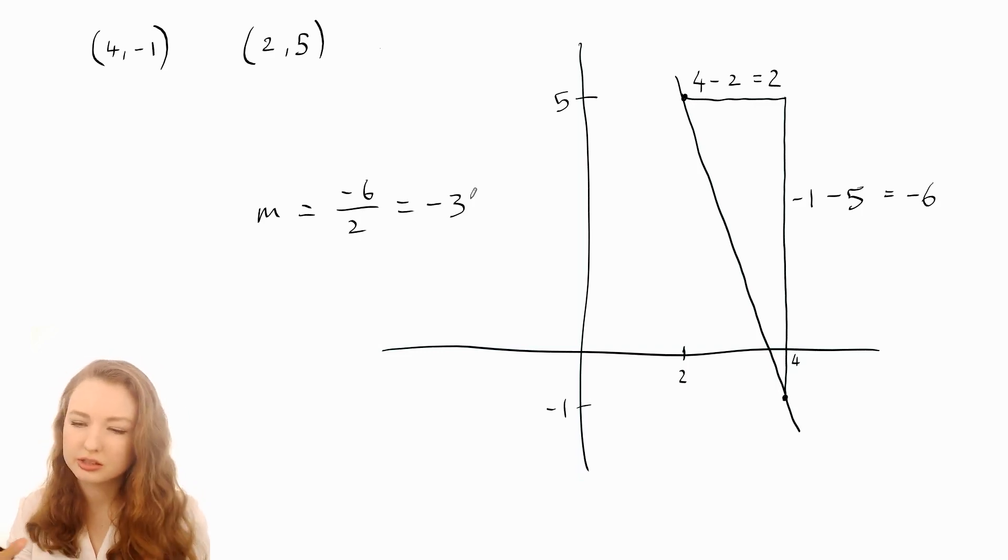Let's deconstruct this process so we can use it for other coordinates, because we're not always going to have a diagram to work from. What did we actually do to figure these things out? For the rise, we did one of the y-coordinates minus the other one, and for the run we did one of the x-coordinates minus the other one.